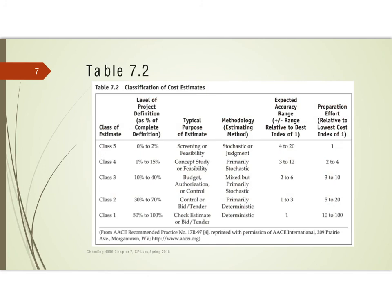The authors have Table 7.2 in your textbook, where they classify the cost estimates. They have lots of different names for these and talk about the level of project definition. Looking at this column, Class 5 is the screening or feasibility stage.